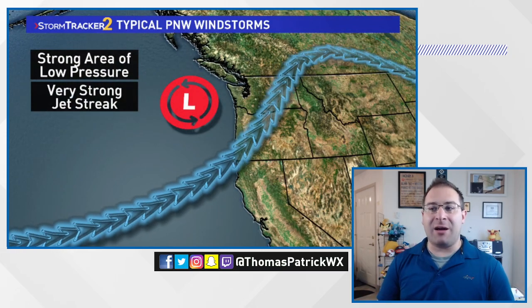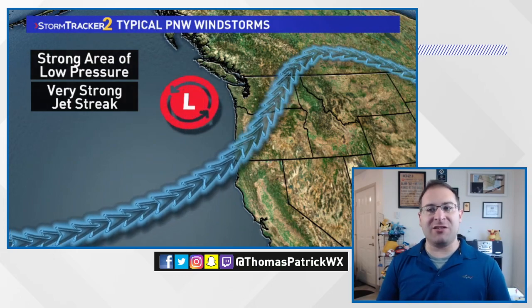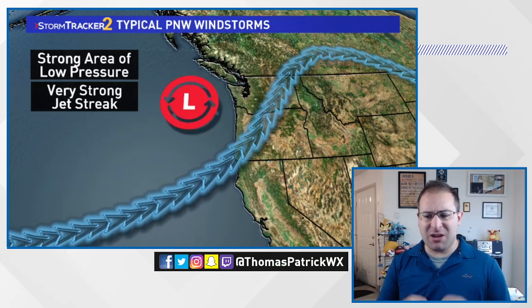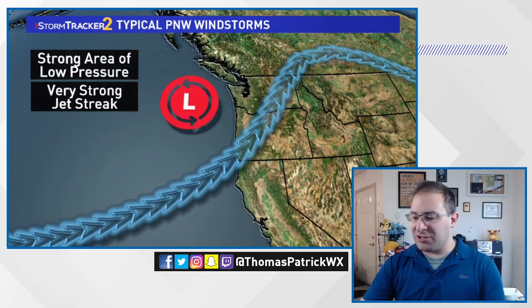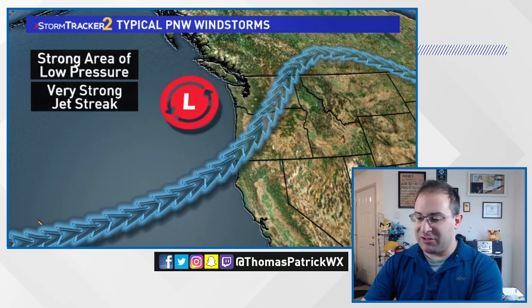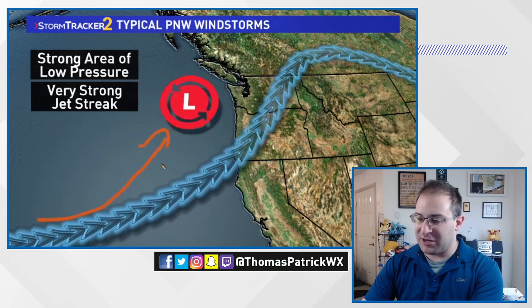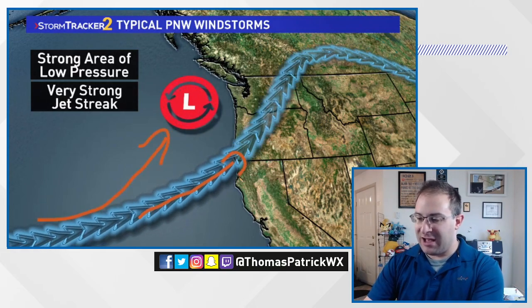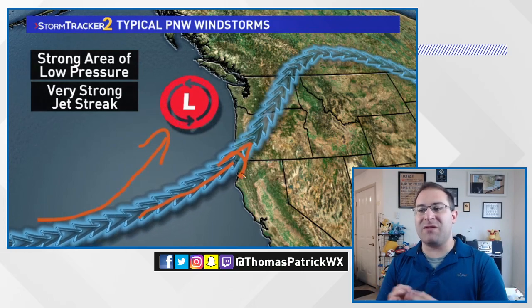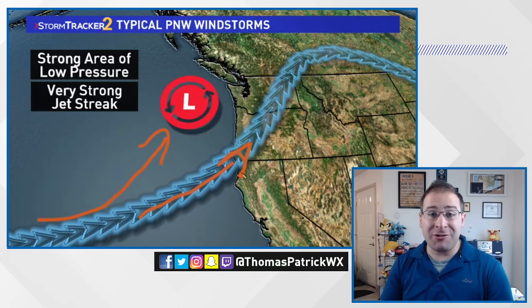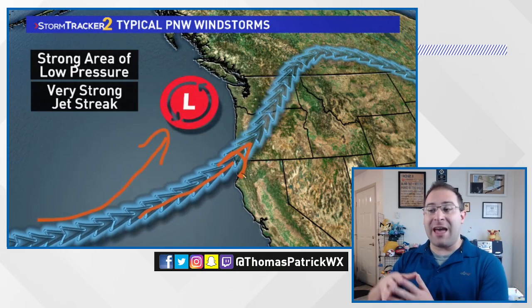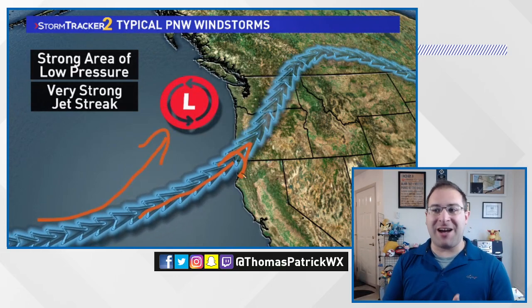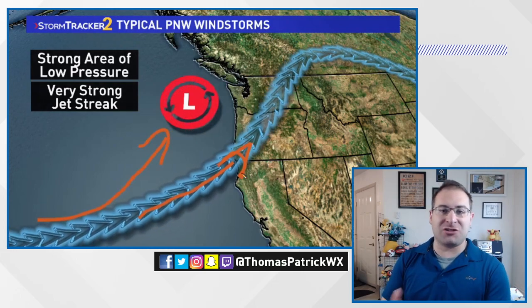Here's the typical Pacific Northwest windstorm setup: we have a low pressure area and a very strong jet stream and jet streak accompanying it. The direction matters — some of the strongest windstorms had the low pressure sweep in from a particular direction, and jet streaks embedded in the jet stream cause wind speeds to be even faster, with jet stream winds of 200 miles per hour or more. That wind energy transfers down to the surface, and since it's coming onshore there's not much friction to slow it down until it hits land, mountains, and trees.